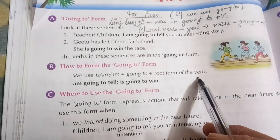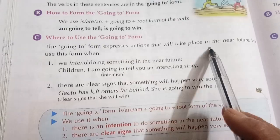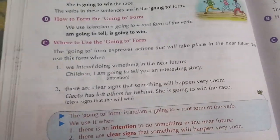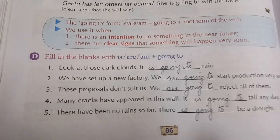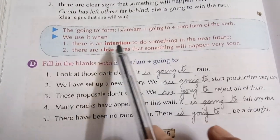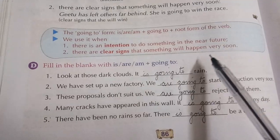Root form means the first form of the verb. The going to form expresses actions that will take place in the near future — meaning abhi kuch karne wale hain. It is used when there is an intention to do something in the near future, or when there are clear signs that something will happen very soon — jaldi hi kuch karne wale hain.